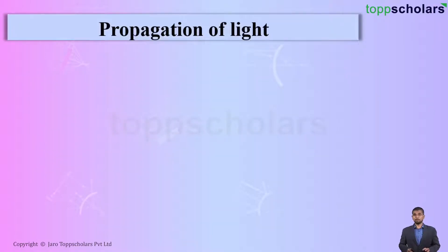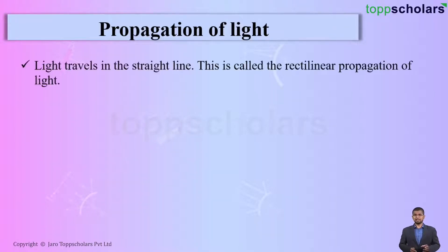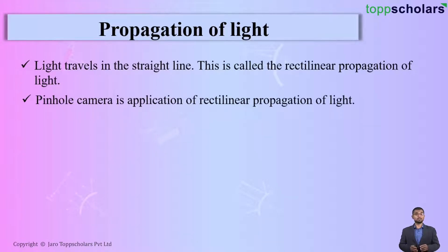Now, before learning about pinhole camera, let us understand about propagation of light. Students, light travels in a straight line and this property of light is known as rectilinear propagation of light. This property is used in pinhole camera to get the image.